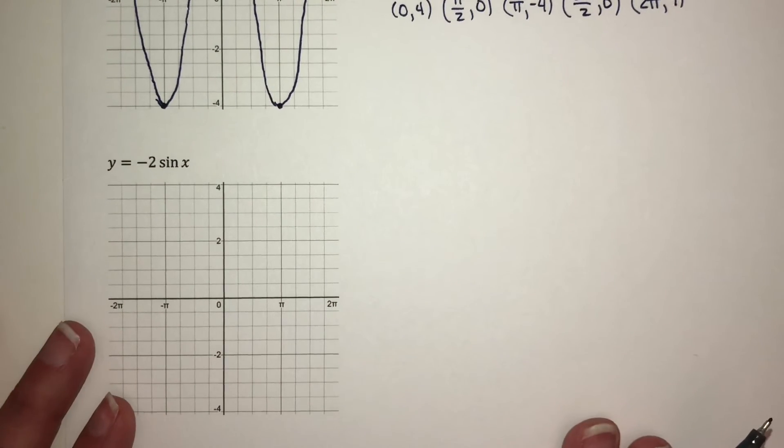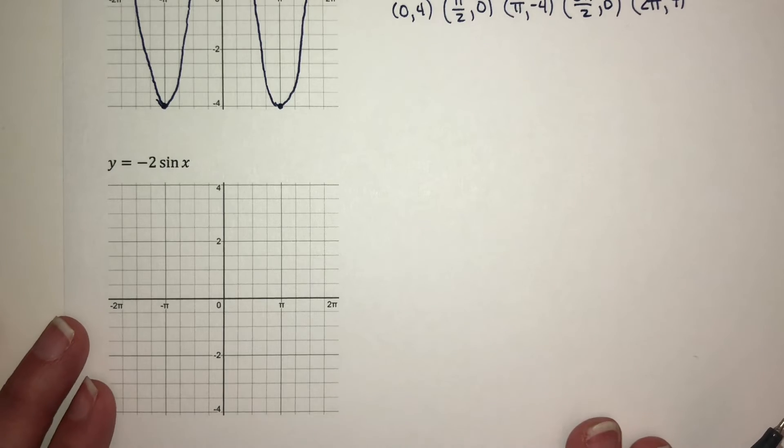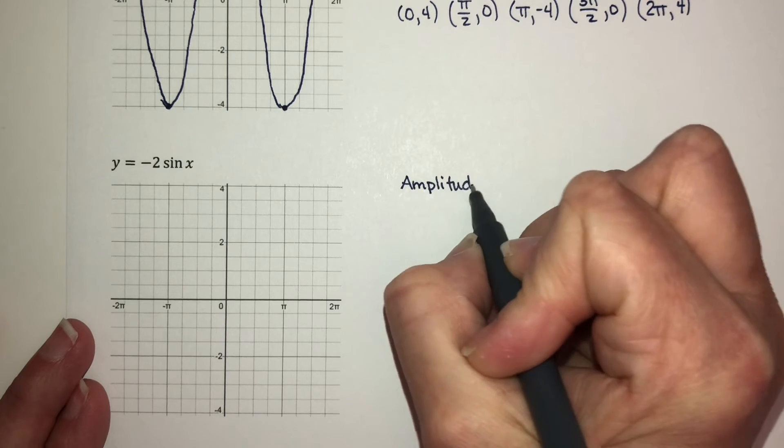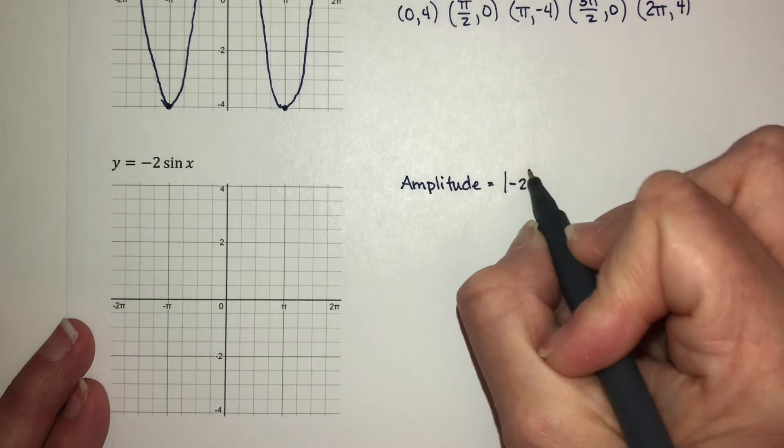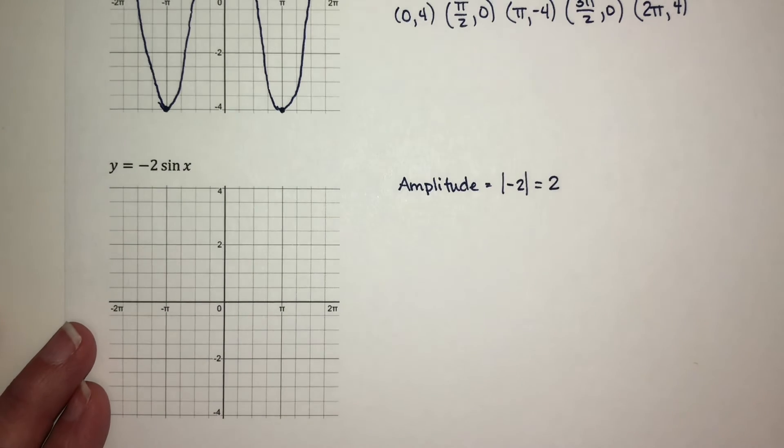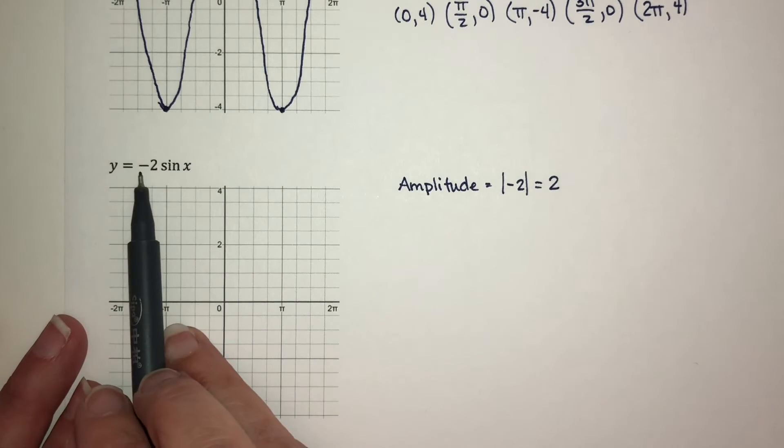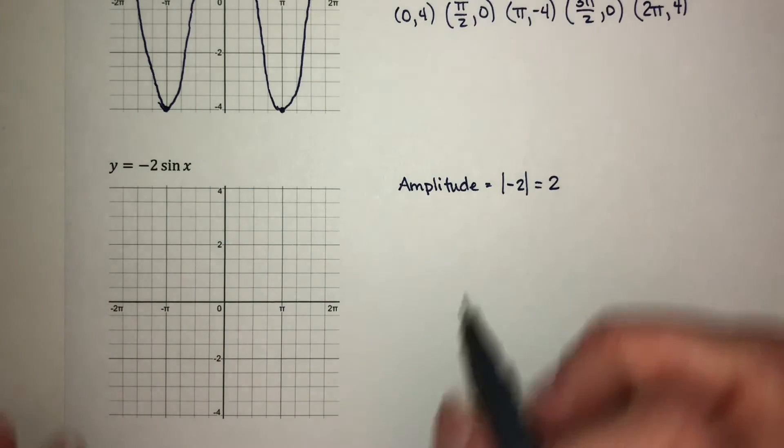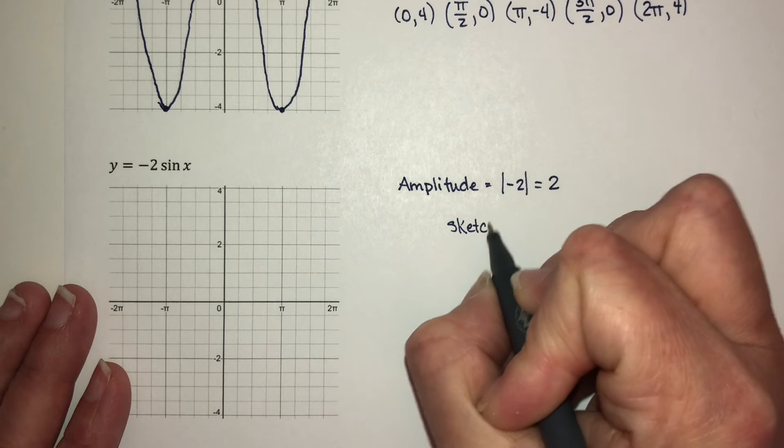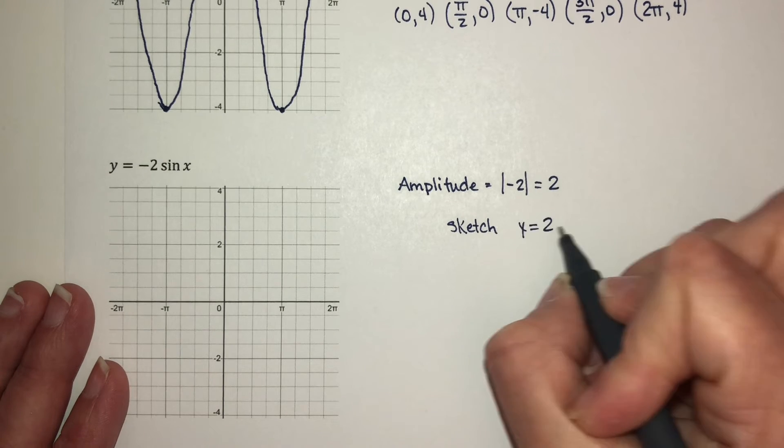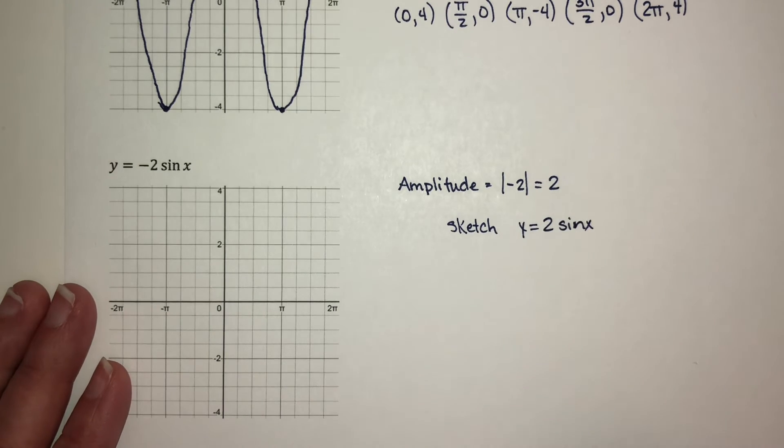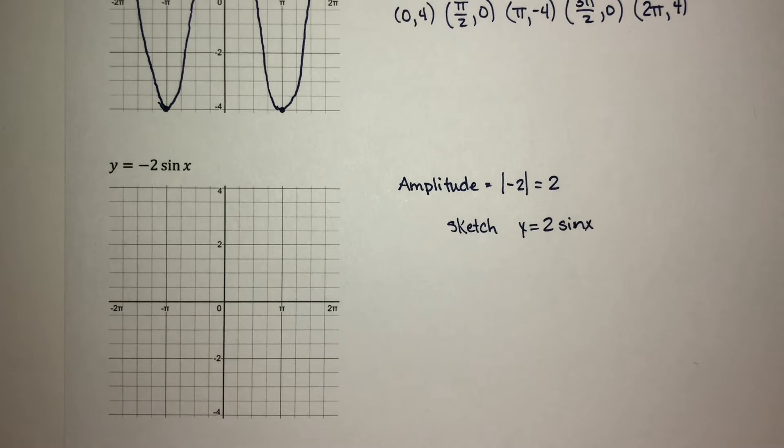Now let's graph y = -2 sin x. Here my amplitude is the absolute value of negative 2, so that is simply 2. Now since this is a negative number, I know I'm going to need to reflect it about the x-axis. So what I'm going to do is I'm going to lightly sketch y = 2 sin x. I'm going to sketch it with a positive value and then reflect it at the end.